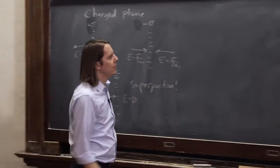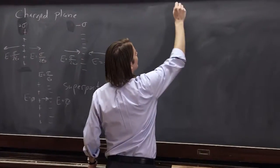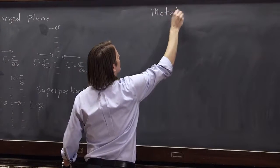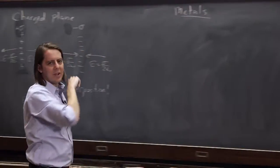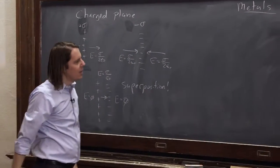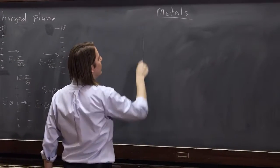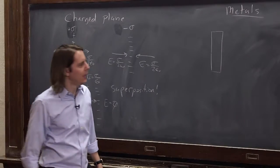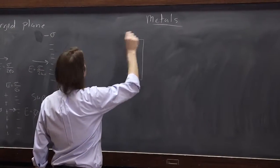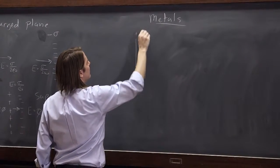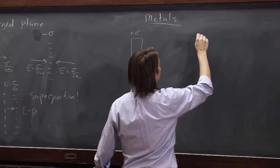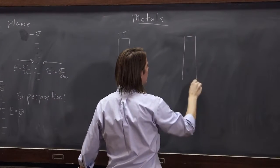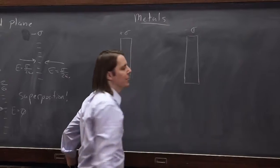Now let's think about it for metals, or for conductors. I'm just going to go ahead and write metals, because that's how we make capacitors. Let's think about a metal-charged plane like that. Let's have a positive one with positive sigma, and let's have far away a negative one with negative sigma.